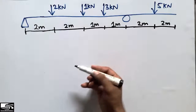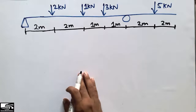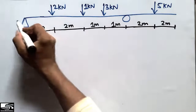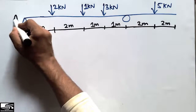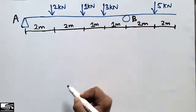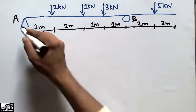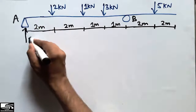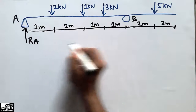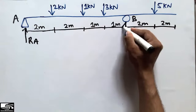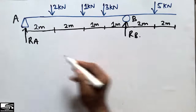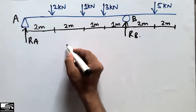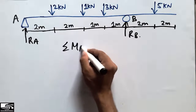To find the shear force and bending moment diagram, first we have to find the reaction forces. There are two supports: one is a hinge and one is a roller. We have to find these reactions — RA and RB.